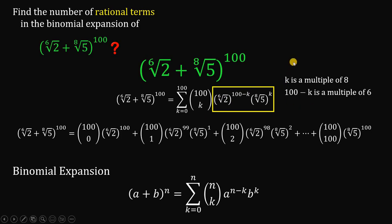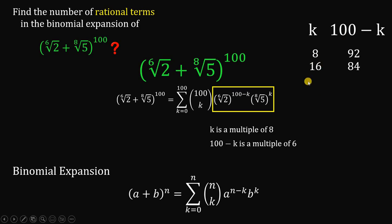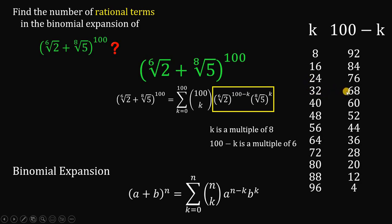Using this information, we can make a table of k and (100 minus k). We know k must be a multiple of 8 and (100 minus k) must be a multiple of 6. For example, if k equals 8, then 100 minus k is 92 — not a multiple of 6. If k equals 16, then 100 minus k is 84. If k equals 24, then 100 minus k is 76. Continuing this list: if k equals 32, then 100 minus k is 68; all the way up to k equals 96, where 100 minus k equals 4.